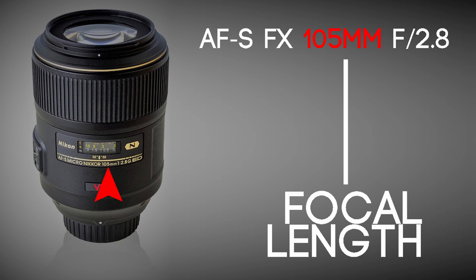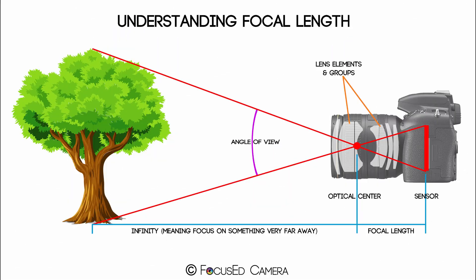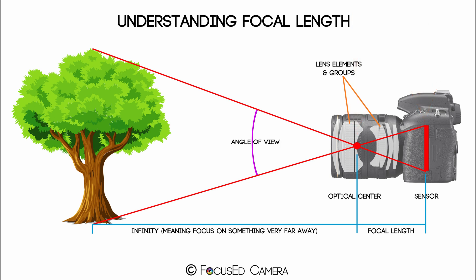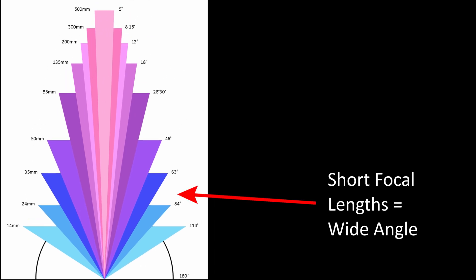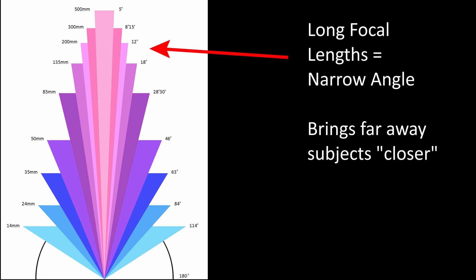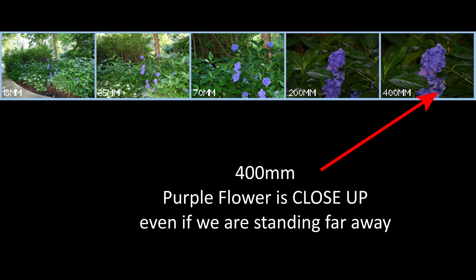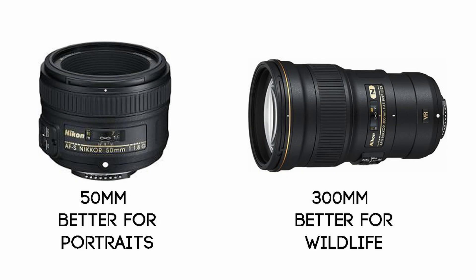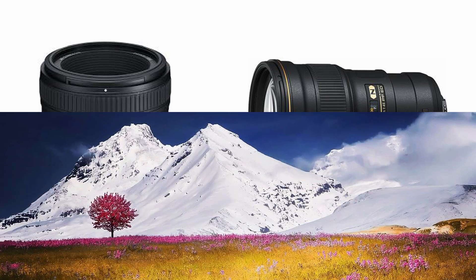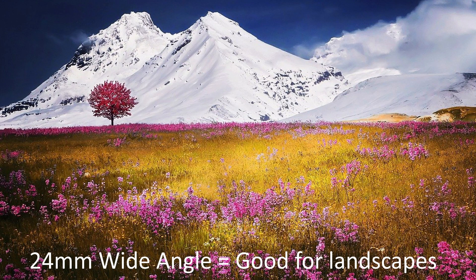The next set of letters and numbers to understand is the focal length, measured in millimeters. This number is the distance between the camera's sensor and the lens's convergence or focus point — it is not the actual physical length of the lens. The focal length tells us how much of our scene will be captured, basically our angle of view. Short focal lengths have wider angles of view, whereas longer focal lengths have a smaller angle of view and higher magnification. A 400mm lens will bring a smaller area of the scene closer to you than an 18mm lens. Different focal lengths are better for different types of photography, so choose lenses with the appropriate focal length for what you're photographing.